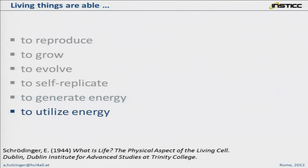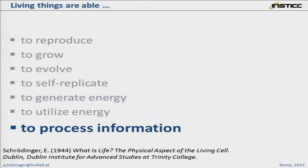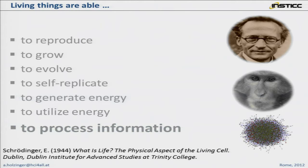To utilize energy and, most of all, to process information — this is the evolution here, from cell point cloud data to this animal and finally to this person, Schrödinger in this example. And this is from the original paper from 1944, 'What is Life? The Physical Aspect of the Living Cell' — one of the most famous papers of Schrödinger.